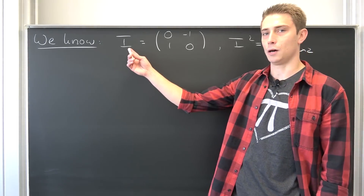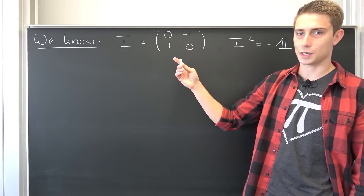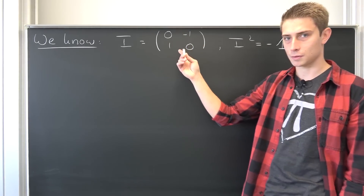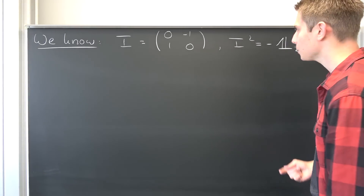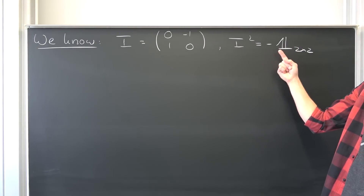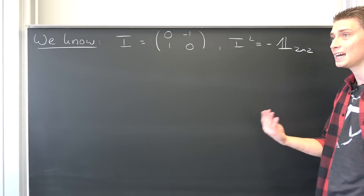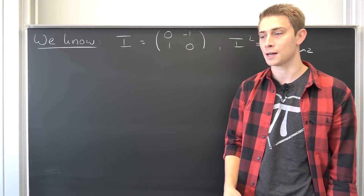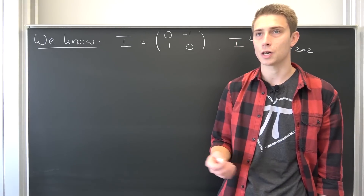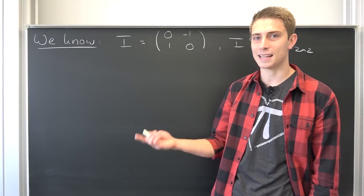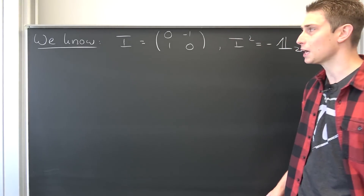We know by now that the imaginary unit I can be constructed as this 2×2 matrix, and it has two peculiar properties: namely that I squared is equal to negative the identity matrix, and I is an orthogonal matrix. Why it makes sense for it to be an orthogonal matrix, you are going to see in the next episode and kind of at the end of this episode.